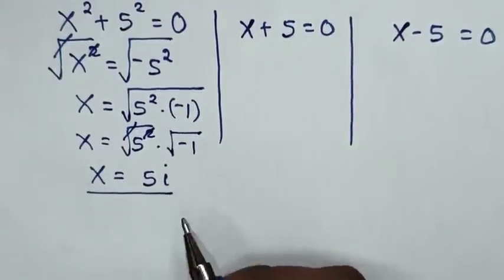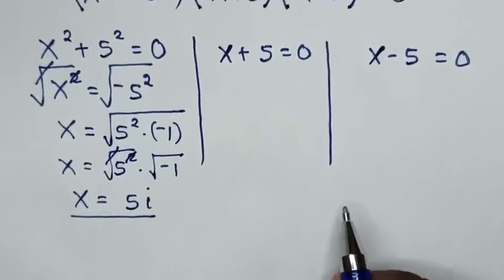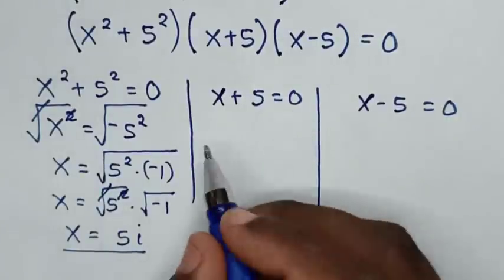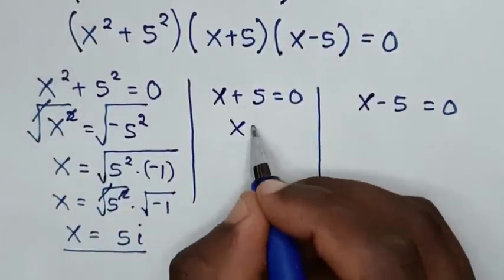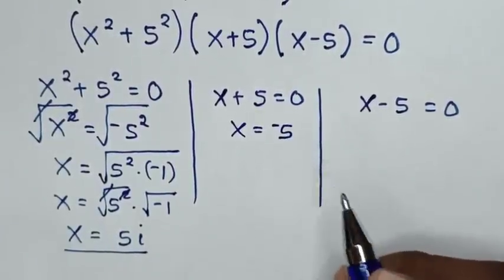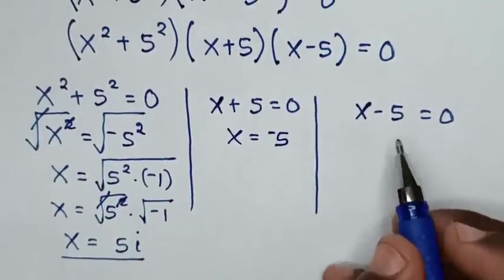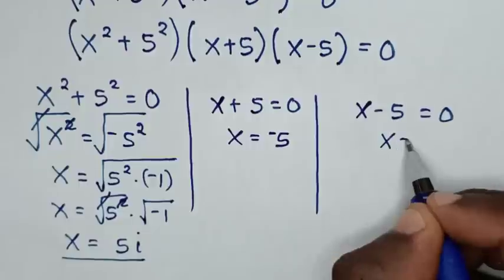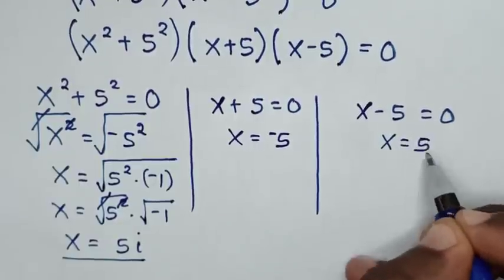From the second solution, we take 5 to the right side, so x equals negative 5. And from the third solution, we take negative 5 to the right side, so x equals 5.